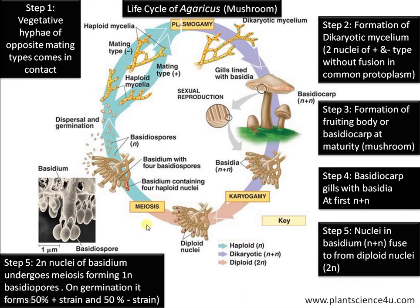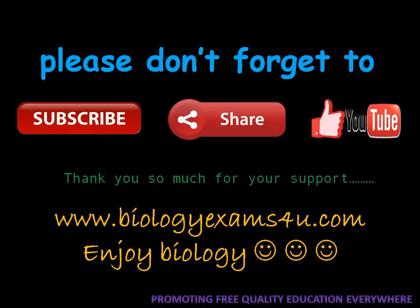On the basidia, the dicharyotic nuclei fuse to form a diploid nucleus, which further undergoes meiosis forming haploid nuclei that transform into basidiospores. The basidiospores released on a suitable substratum germinate and form fifty percent plus strain and fifty percent minus strain, thus completing the life cycle.